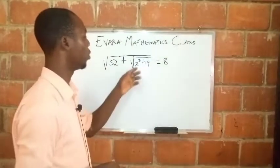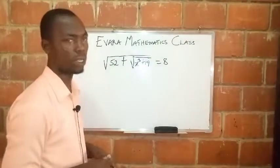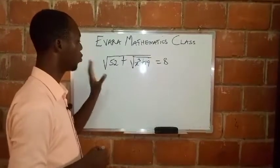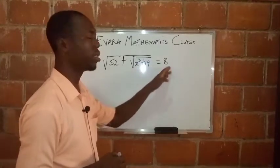Good day boys at home. We have to solve this equation to get the value of x. We have root 52 plus square root of x cubed plus 19 equals 8.